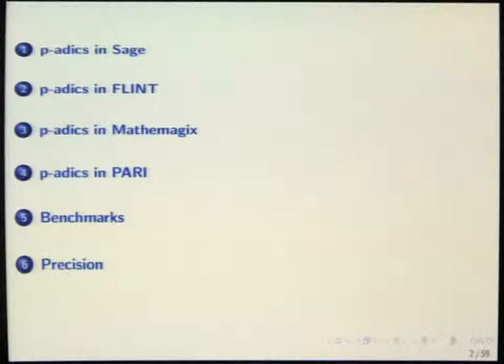I didn't really do anything about all of this — it's mostly work by other people. For SAGE, I don't really know, maybe some of the people here. For Flint, it's mostly work by Sébastien Pancras, who used to be a PhD student here. Mathemagic is built up from École Polytechnique and some other institutions. PariGP is developed in Bordeaux, and the work on precision is mostly by David Wall and Zajic.